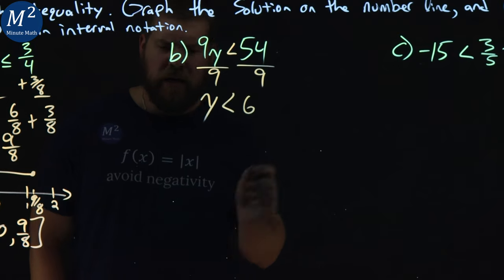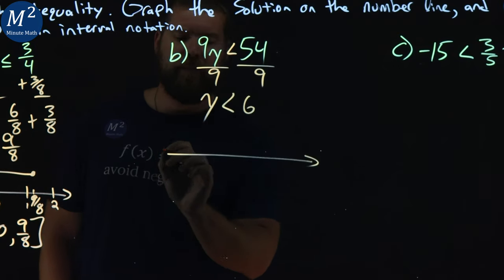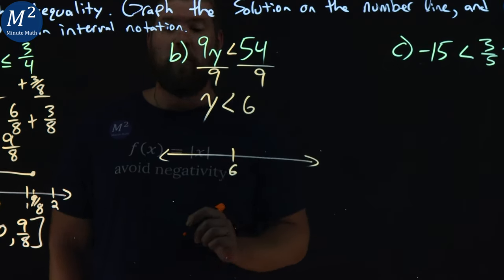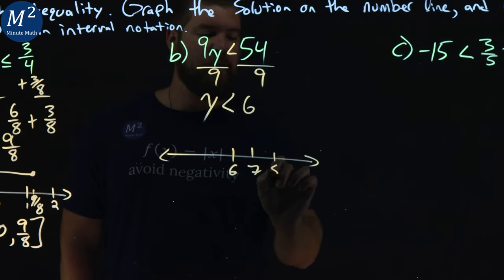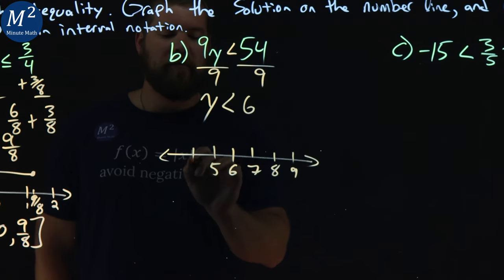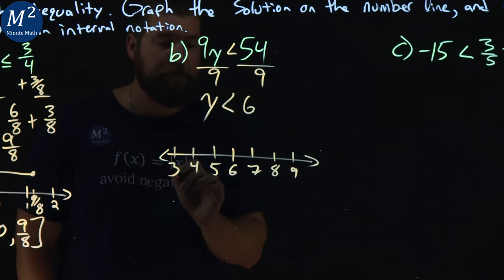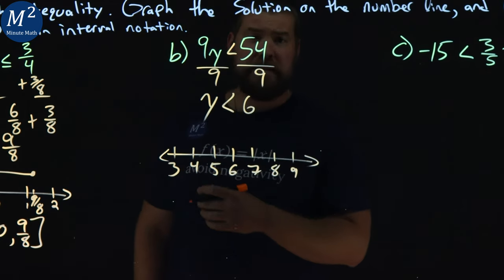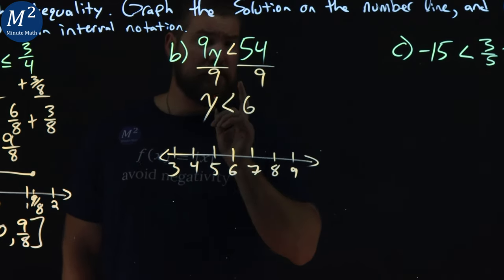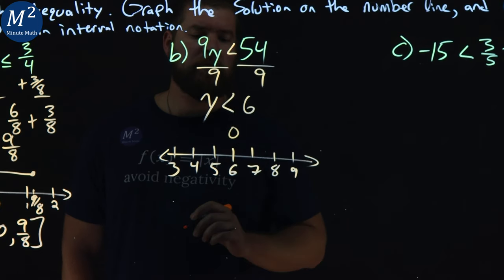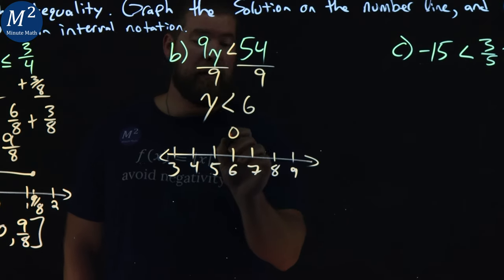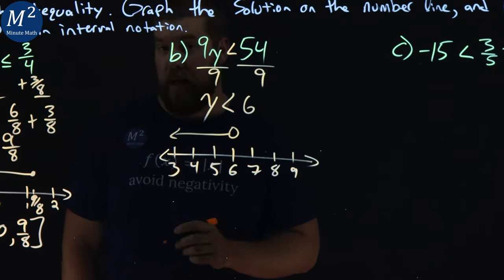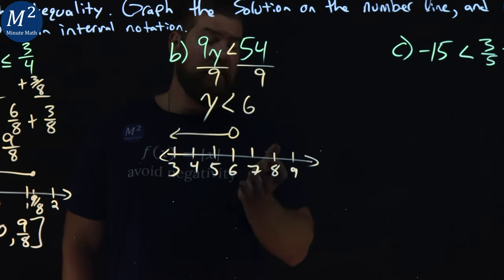So let's write this on a number line here. Let's start with 6 in the middle. Then we go 7, 8, 9, and we have to the left 5, 4, 3. Well, y is less than 6. It's not equal to 6, just less than. So we have an open circle there at 6. And since y is less than that, we put the arrow to the left from it.